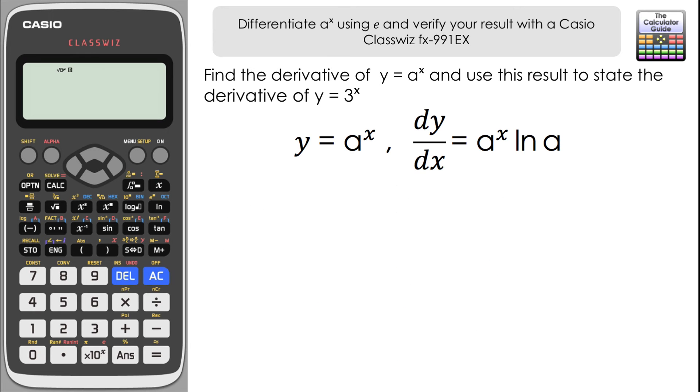So therefore it follows through that if we had y equals three to the power of x, what we could do is essentially three would be our a, so we could rewrite that as three to the power of x ln three. And what we're going to do is use the ClassWiz to verify that result for us.